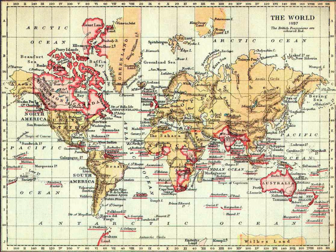From 1870, the Dominion included two vast neighbouring British territories that did not have any form of self-government: Rupert's Land and the North-Western Territory, parts of which later became the provinces of Manitoba, Saskatchewan, Alberta, and the separate territories—the North-West Territories, Yukon and Nunavut. In 1871, the Crown Colony of British Columbia became a Canadian province; Prince Edward Island joined in 1873 and Newfoundland in 1949.